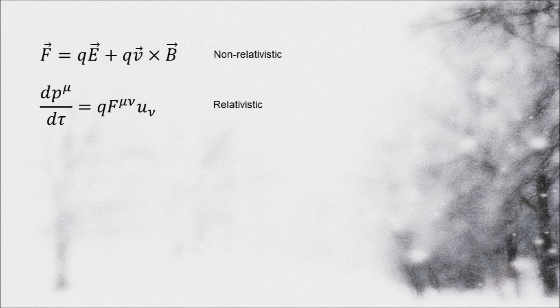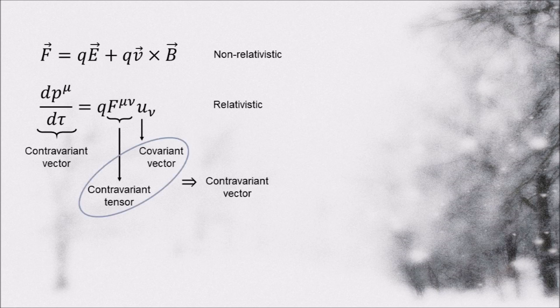On the left, we have a contravariant 4 vector, since tau is a scalar, and on the right we have a contravariant tensor contracted with a covariant vector, which gives us a contravariant 4 vector.